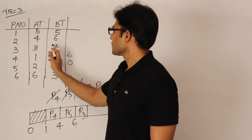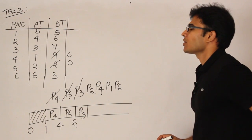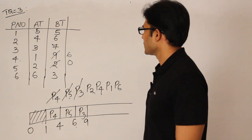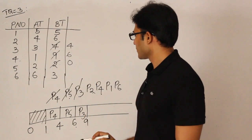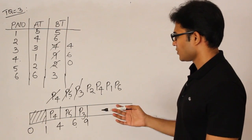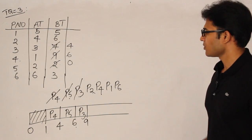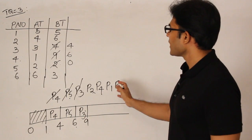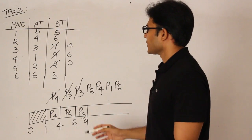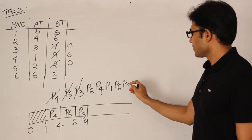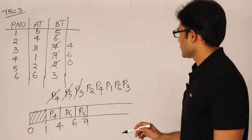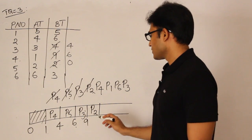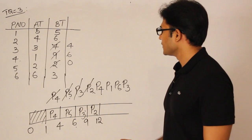Next is P3. P3's burst time is 7, but we run it for only 3 units, so it runs from 6 to 9 with 4 units remaining. By time 9, all processes have arrived, so no need to track new arrivals. Since P3 needs more time, we add it back to the queue. Next is P2, which requires 6 units, so we run it for 3 units.